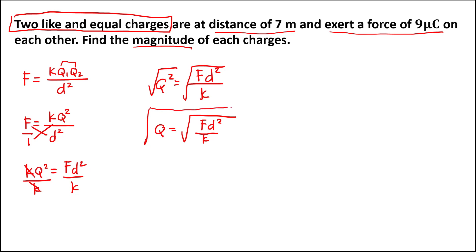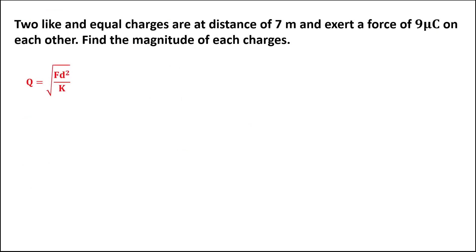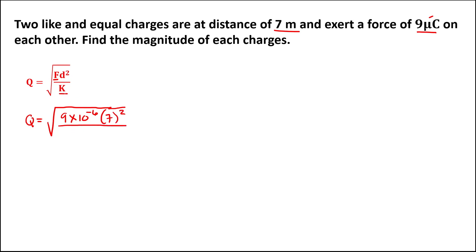So this is the formula to solve for the magnitude of each charge. From the given values, we take the square root of the given force — 9 times 10 to the power negative 6 (since micronewtons) — times the distance squared, so 7 squared, all over the Coulomb's constant, which equals 9 times 10 to the power positive 9.